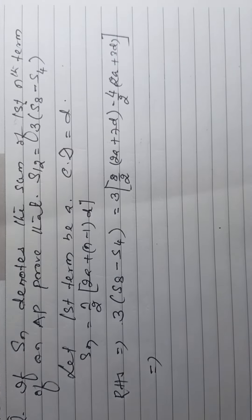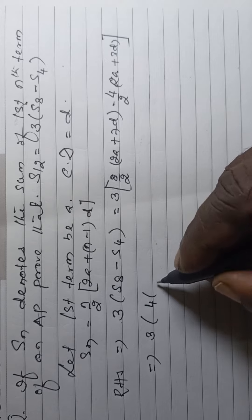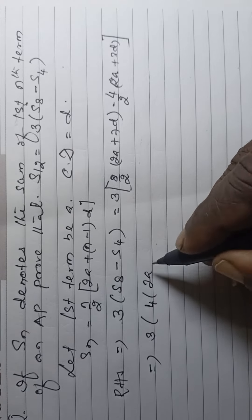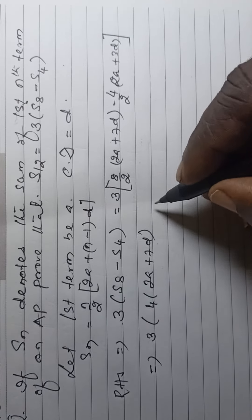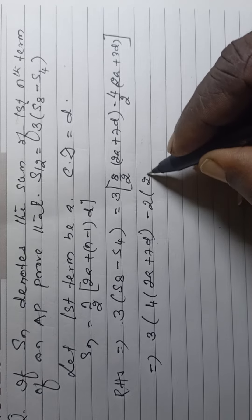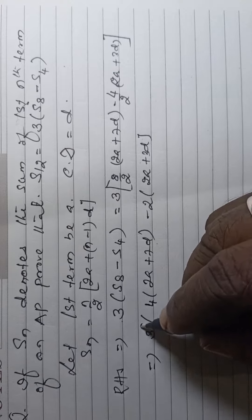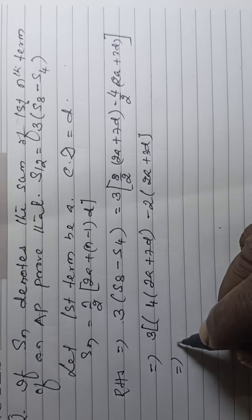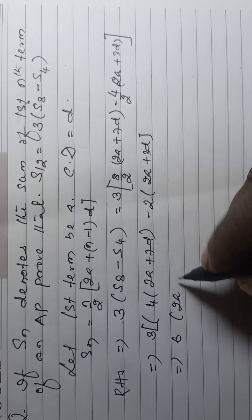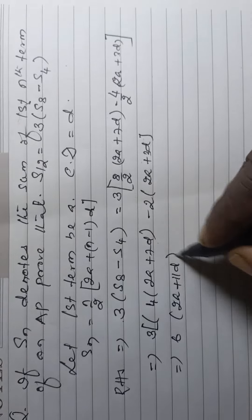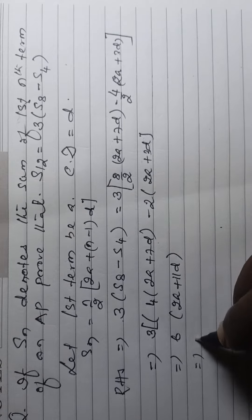Then this is 3 into 4 into 2A plus 7D minus 2 into 2A plus 3D in bracket. Now this is 6 into 2A plus 11D.